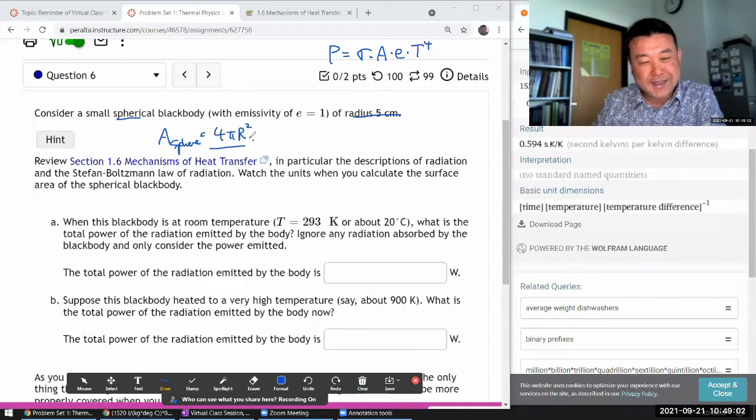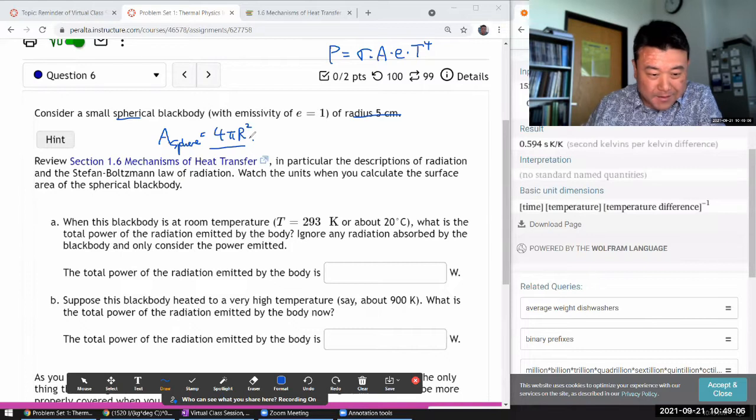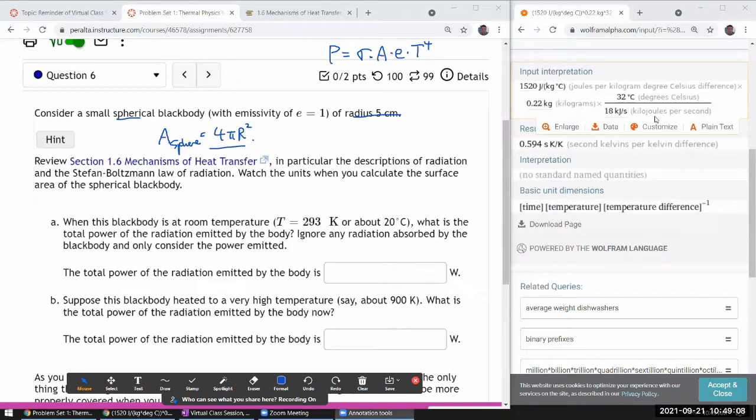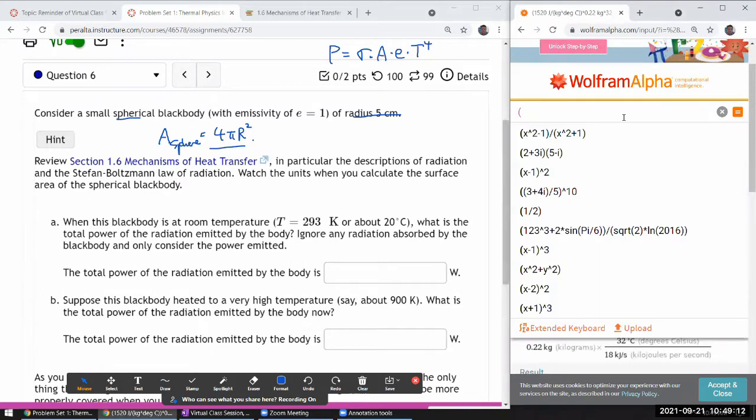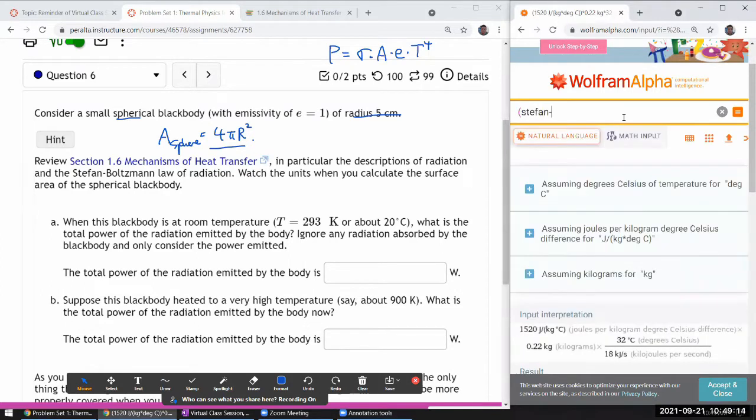Anyway, so that's the area of a sphere. Yeah, so let me just type things in. I think I can let Wolfram Alpha also look up the Stefan Boltzmann constant for me. Stefan Boltzmann constant times area of a sphere. Four times pi times five centimeters squared.